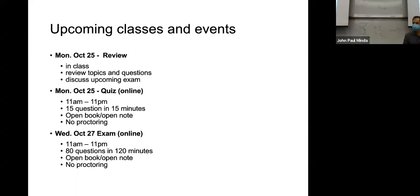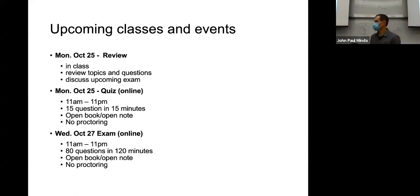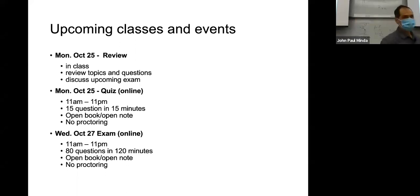One thing I won't do is randomize items for things like 'all of the above' — I'll make sure that doesn't appear as item D or item A. I won't randomize items for things that count. But yes, I haven't finished answering that question yet because I haven't finished building the online exam yet.